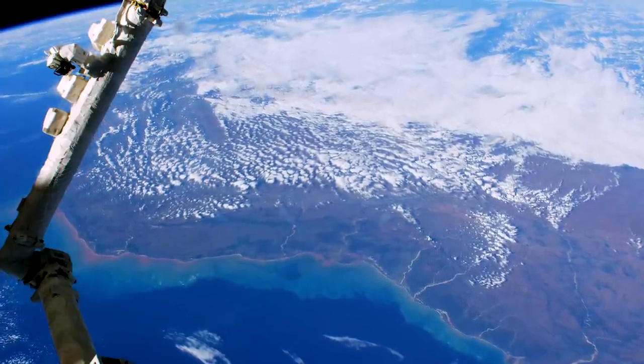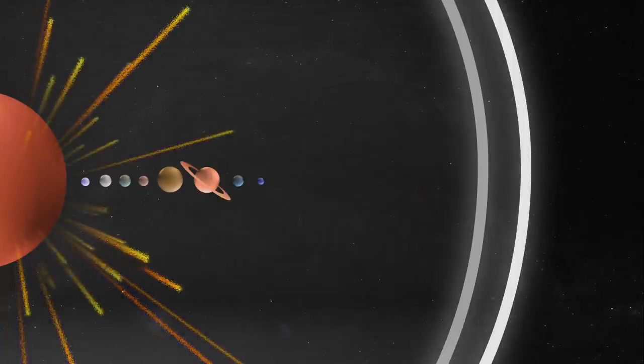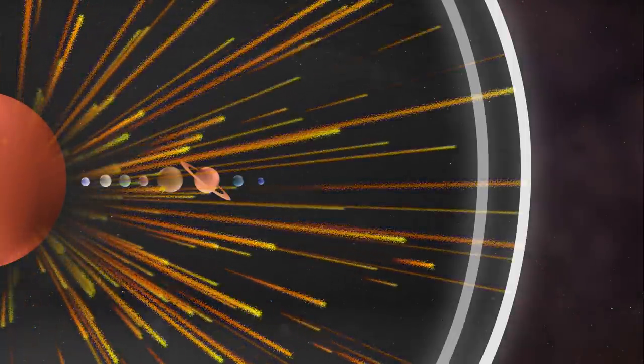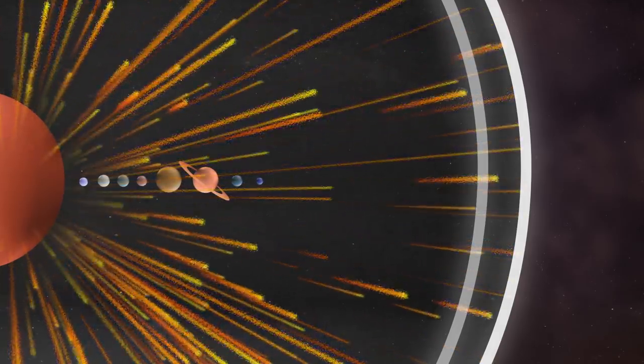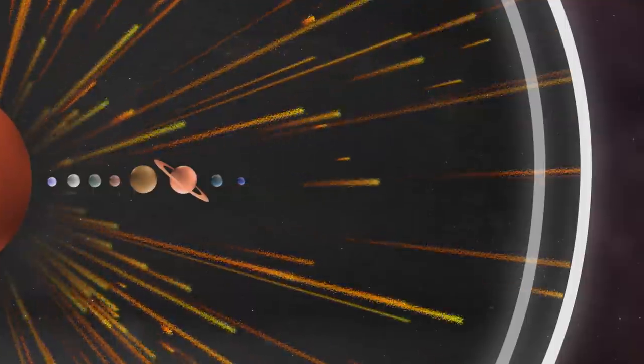But its borders aren't fixed. Around 11 billion miles from Earth, far past the planets, solar wind pushes against interstellar space. Scientists have been monitoring this boundary over the past decade and they're seeing it change with the sun's activity.